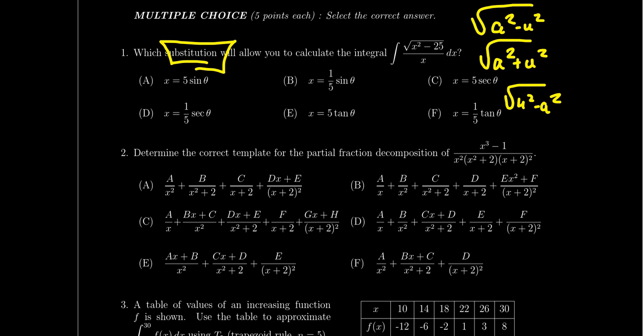For a linear denominator, you should have just a constant on top. For an irreducible quadratic, you should have some type of linear factor on top, like dx plus e or something like that. Question two is just a starter question — you don't have to do the complete partial fraction decomposition. All you have to do is determine what is the right template to get started. Topics of partial fraction decomposition were covered in lectures 14 and 15.